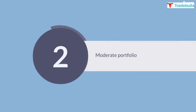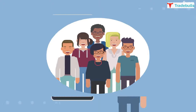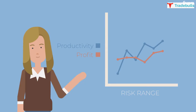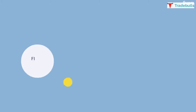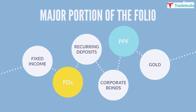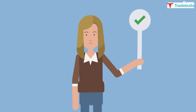2. Moderate Portfolio. Here it is 20–25% equity and 75–80% other assets. It is appropriate for investors who want to maintain the majority of their portfolio's total value while taking on some risk to guard against inflation. Within this risk range, current income is a popular approach. Composition: Mostly fixed income — FDs, recurring deposits, corporate bonds, PPF, gold, etc. — constitute the major portion of the folio, while 20–25% equities via index ETFs and blue chip stocks for long-term appreciation are considered the right mix.